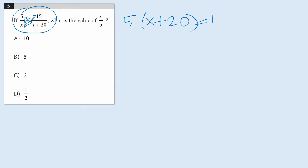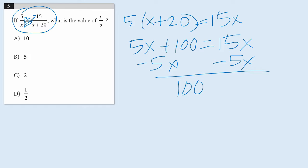equals 15x. And you can start distributing the 5, so I have 5x plus 100 equals 15x. I can subtract 5x from both sides, and I have 100 equals 10x. I can divide both sides by 10, and I end up with x equals 10.